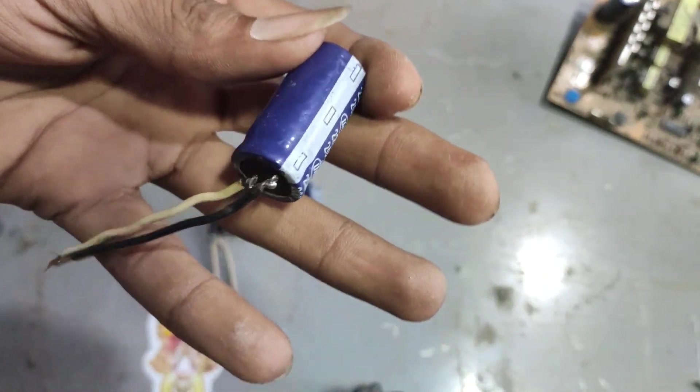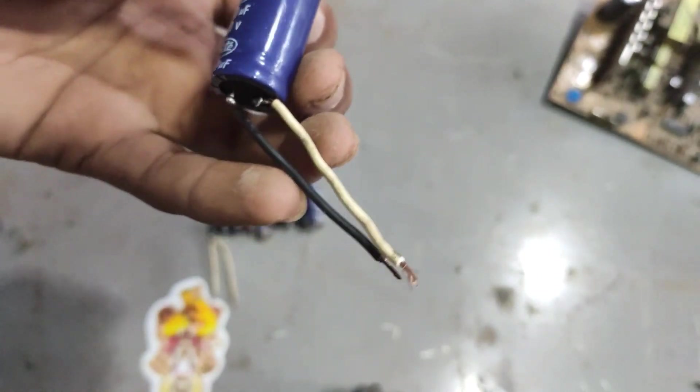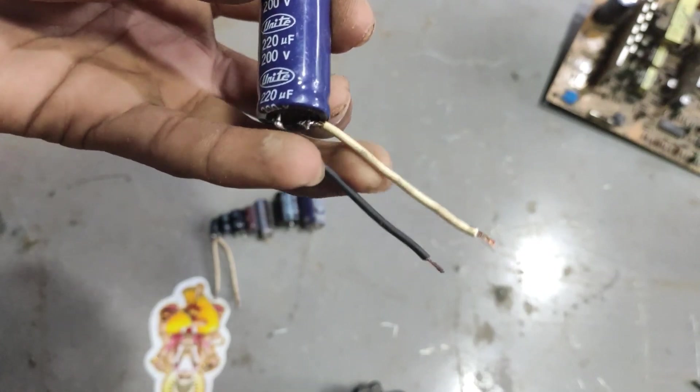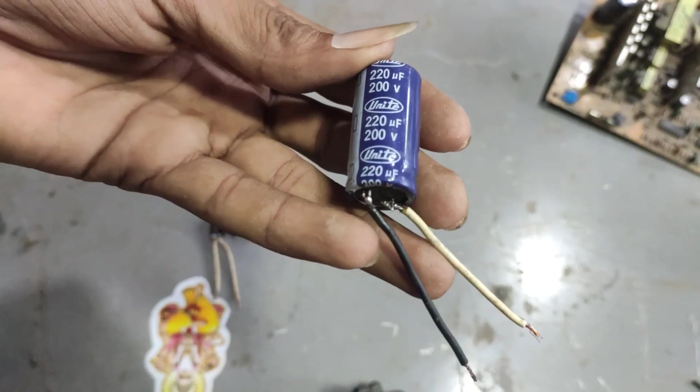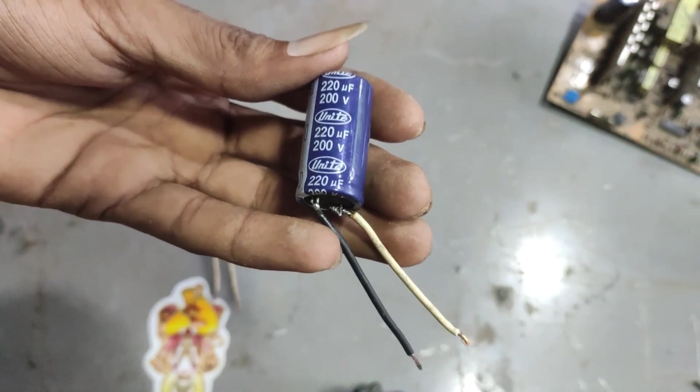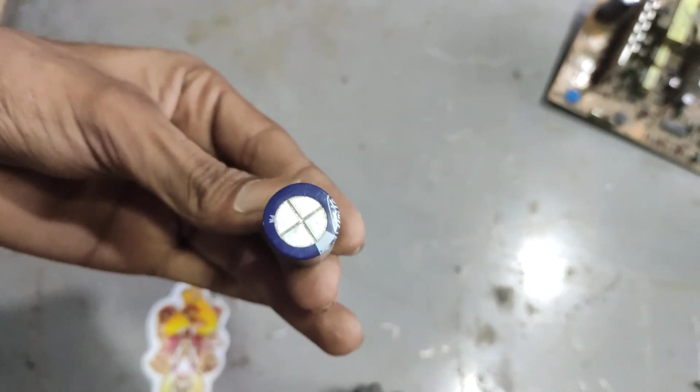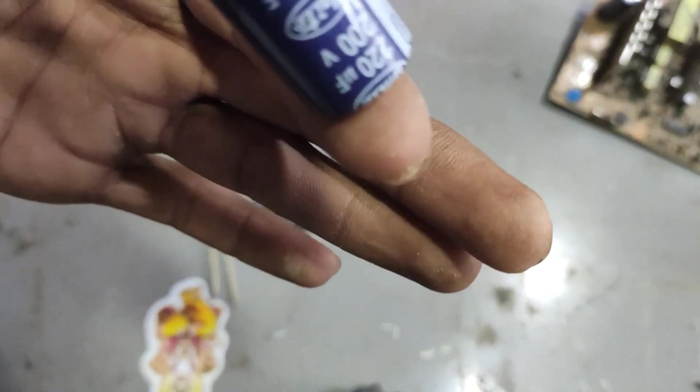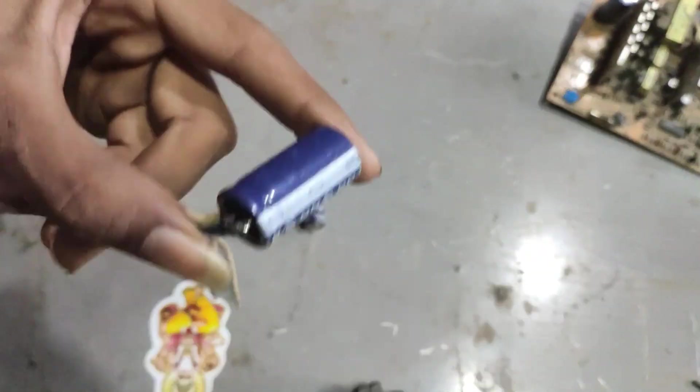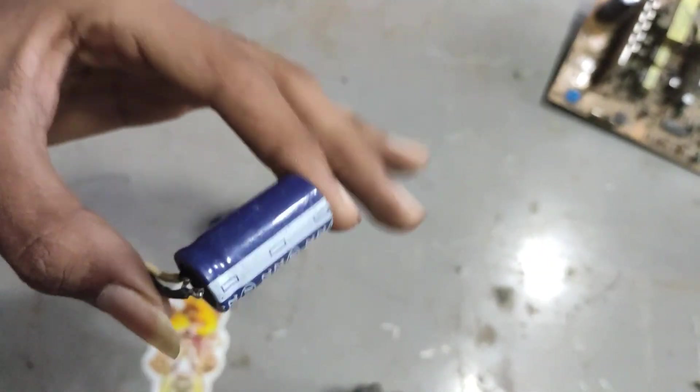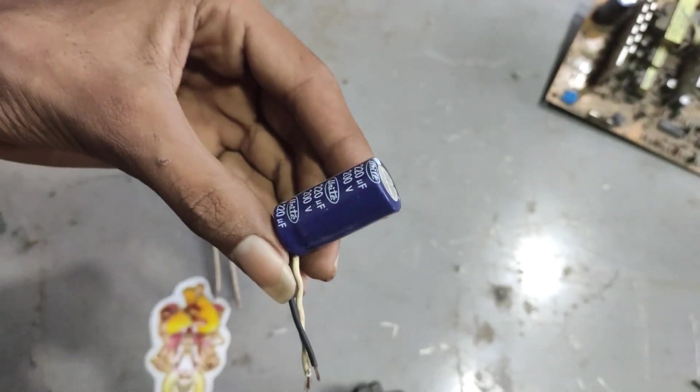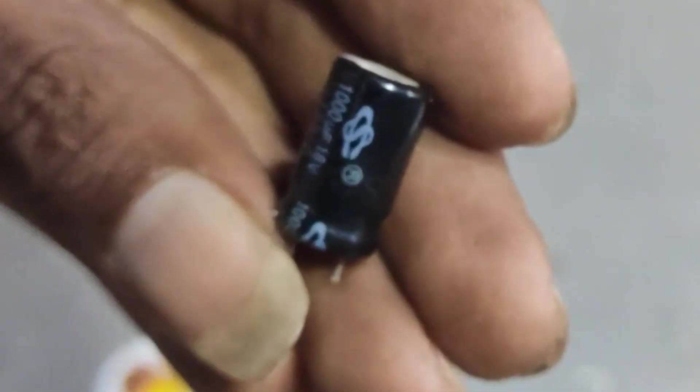Anyway, you might have heard of explosions in electronic circuits, and this is the main culprit for that. Batteries and capacitors are the only things in an electronic circuit that can explode during normal function. Since batteries and capacitors are similar in many ways, the conditions that make these things explode are also the same. So we will discuss some of the reasons why these capacitors explode.